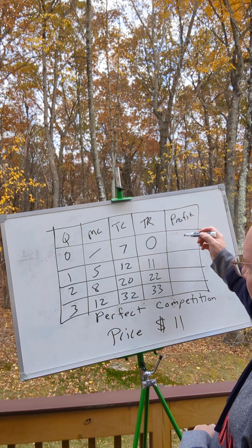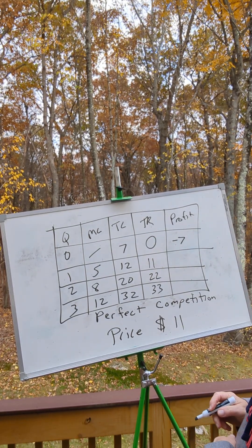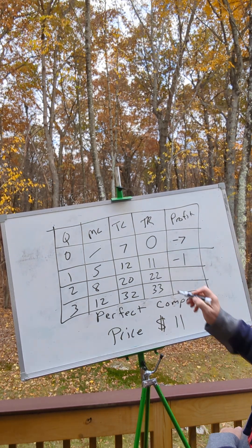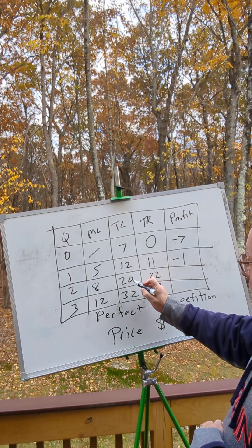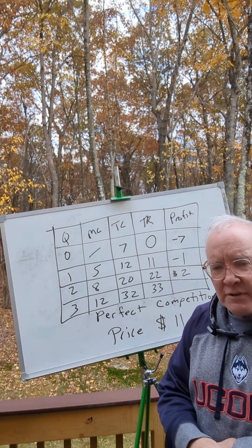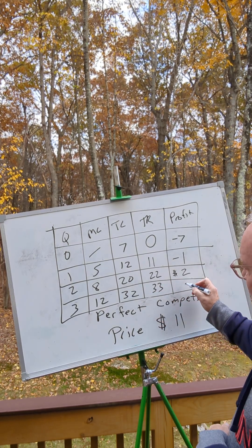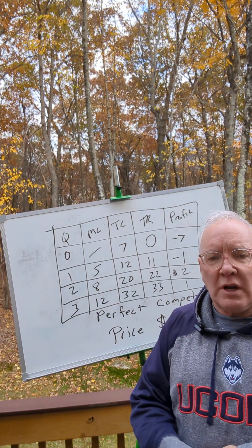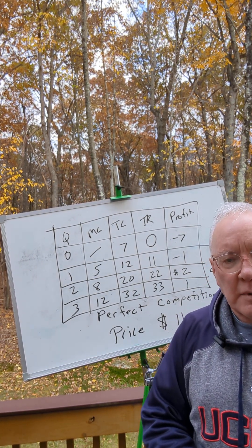Now let's check our profit. Our profit at quantity zero would be 0 minus 7, so that's negative $7. Our profit at item 1 would be total revenue 11 minus total cost of 12, that's negative 1. At quantity 2, our profit would be total revenue 22 minus total cost of 20, so that would be $2. And that was what I had suggested would be our maximum profit. At three items, our total revenue is 33, the total cost is 32, and our profit is $1. So 2 is greater than 1, so we'd rather have a profit of $2 than a profit of $1. So we are going to produce two items in perfect competition as a way to maximize our profit.